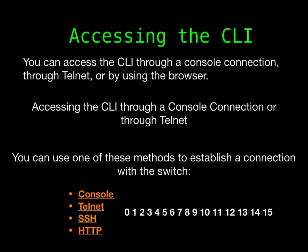Use any Telnet TCP/IP or encrypted secure shell package from a remote management station. The switch must have network connectivity with the Telnet or SSH client, and the switch must have an enable secret password configured. The switch supports up to 16 simultaneous Telnet sessions. Changes made by one Telnet user are reflected in all other Telnet sessions. After you connect through the console port, through a Telnet session, or through an SSH session, the user exec prompt appears on the management station.